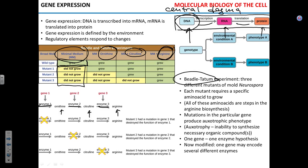It turns out that in the process of arginine biosynthesis in the cell, there are two intermediate steps: first ornithine is synthesized, then citrulline, and then finally arginine. Each step is catalyzed by a specific enzyme. Wild-type had all three enzymes. The mutants lacked either enzyme one, two, or three, responsible for the first, second, and third steps.